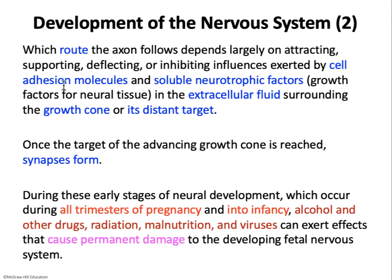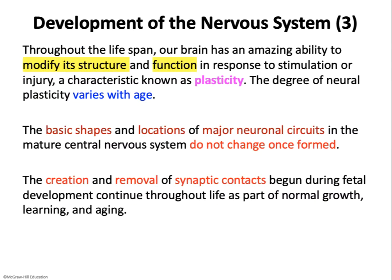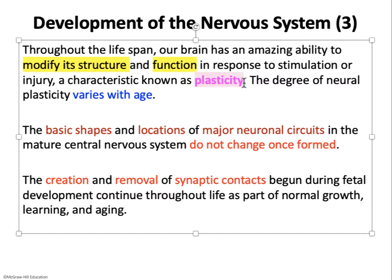Unfortunately, the developing fetus and early baby are susceptible to environmental factors that may permanently damage these developmental pathways, including alcohol, drugs, radiation, malnutrition, and viruses. As the baby develops into adulthood and old age, many regions of the nervous system can adjust their structure and function — known as plasticity — and the degree of neural plasticity varies with age. This refers not to growth changes, but to the making and breaking of synapses and connections in local vicinities, which is where learning and memory take place.